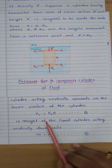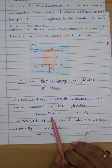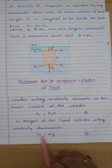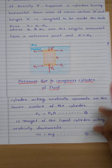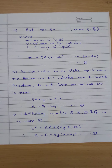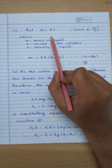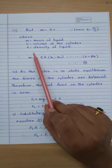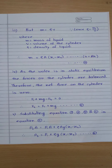So F2 is equal to p2 times A — equation number two. The weight of the liquid cylinder acting vertically downward: W is equal to mg. We know m is equal to rho times V, since density rho equals m divided by V, where m is mass of liquid, V is volume of the cylinder, and rho is density of liquid. Therefore m is equal to rho times A times (x1 minus x2).